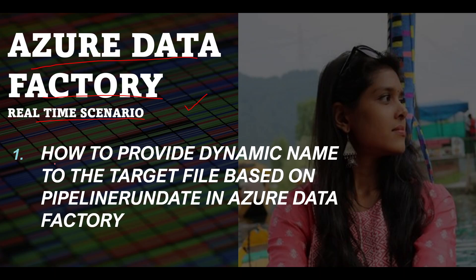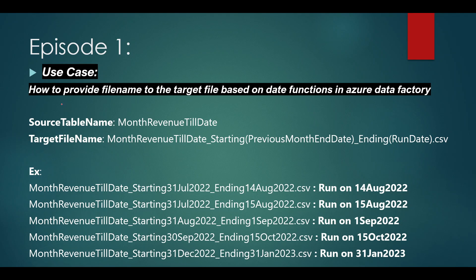In this video we are going to learn a simple use case where we want to load data from a SQL table to a CSV file. In that process we will learn how to provide a dynamic name to the target file based on pipeline run date in Azure Data Factory. We have to provide the file name based on date functions in ADF pipelines.